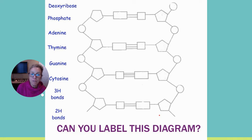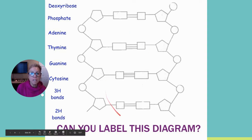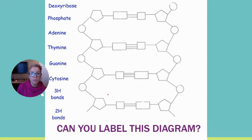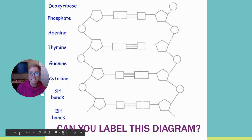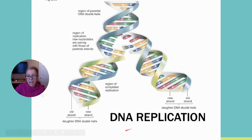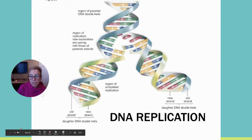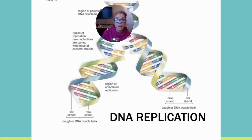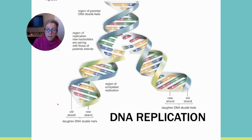Wherever you face a 3' end, that is the leading strand — the enzyme can just take off. Where you face a 5' end, you have to backstitch to replicate it — that becomes the lagging strand. In class we practice labeling these diagrams, identifying the phosphates, sugars, 3' and 5' prime ends, hydrogen bond counts, and purine versus pyrimidine to identify each base.